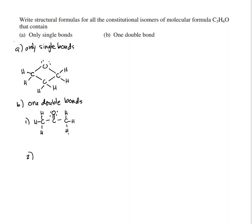The second structure has the double bond at the right carbon: C1-C2-C3=O, with one H on the right carbon, two H's at the middle carbon, and three H's at the left carbon. Each carbon can accommodate four bonds, and there are two lone pairs on the oxygen, so that is also C3H6O.